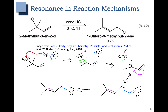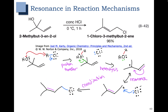To summarize: our first step was a proton transfer to convert the alcohol from a bad leaving group to a good leaving group. Then we had a heterolysis step where the leaving group fell off and gave us a carbocation. Next we showed the resonance between the two different forms, and finally we did our coordination step to get to our product. This concludes chapter 8. In chapter 9, we go into way more detail on substitution and elimination reactions, and we also talk more about multi-step mechanisms.